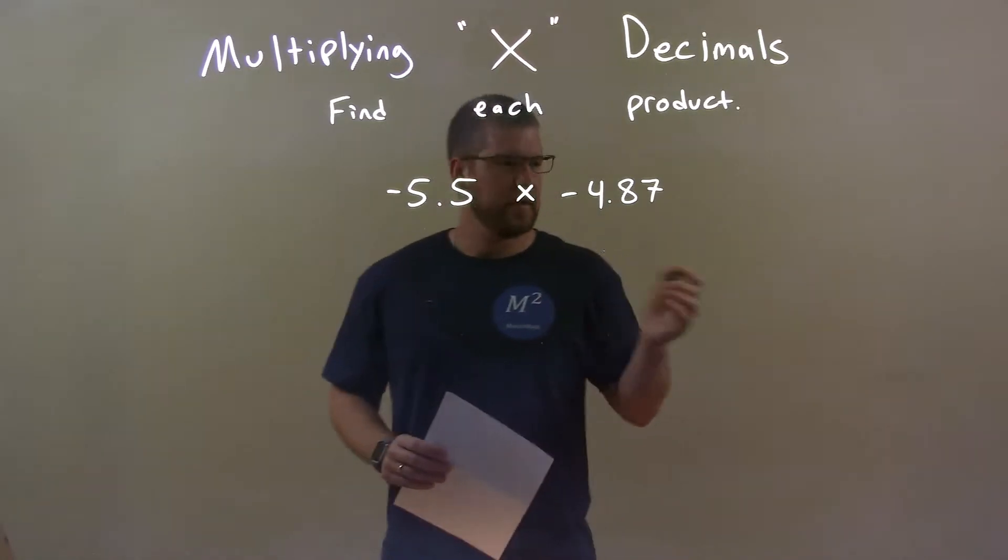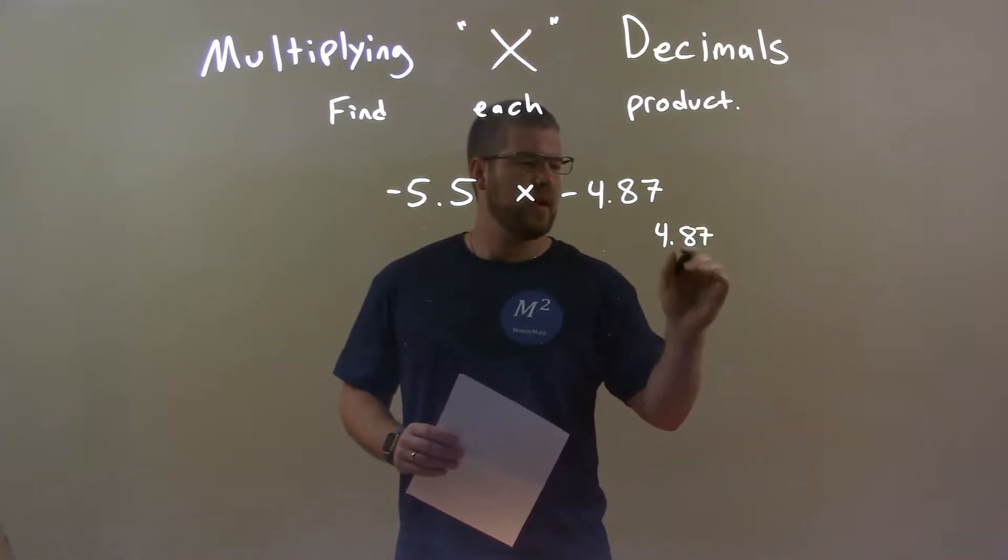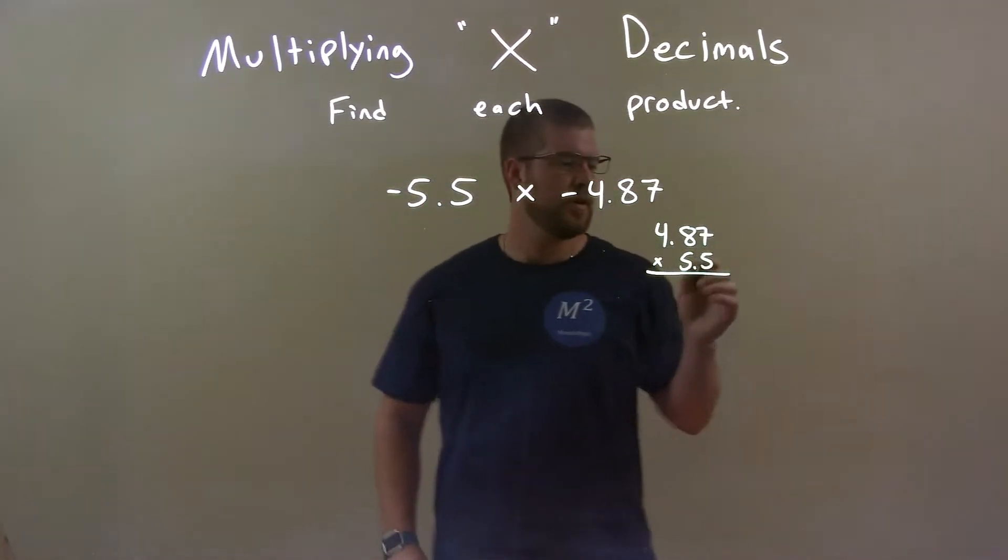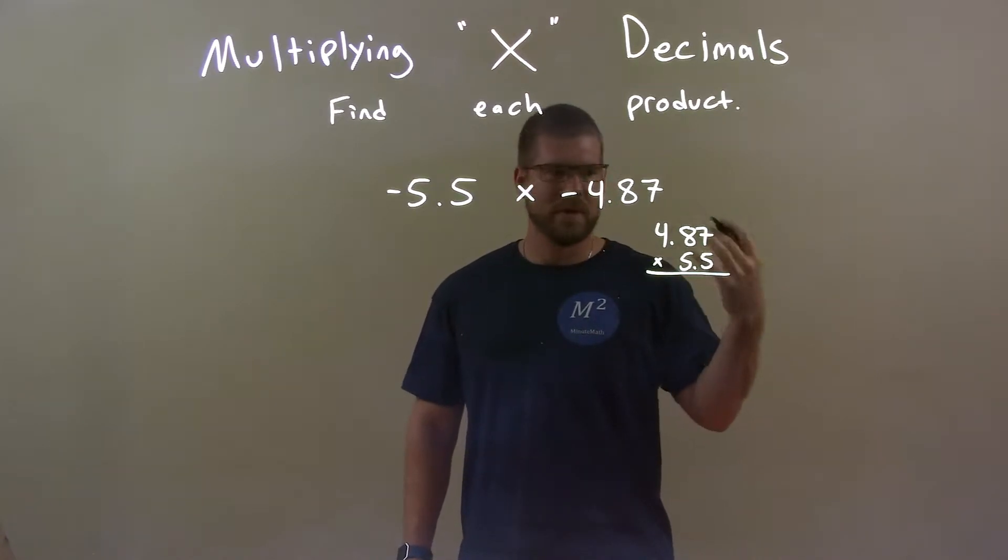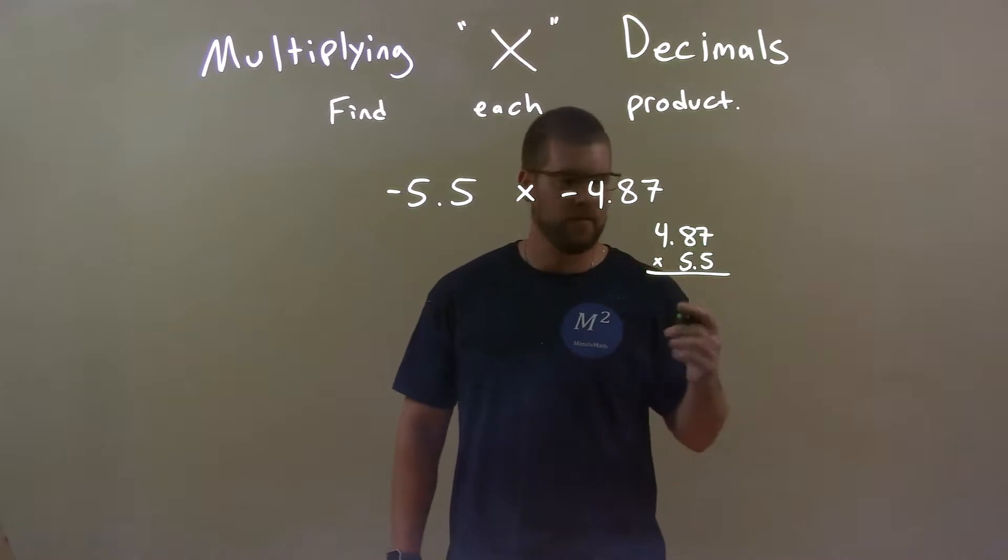I'm going to use my traditional method here and I have 4.87 up top and 5.5 down here. Alright, now what we want to do is just multiply like we do anything else. Imagine the total is 487 times 55.